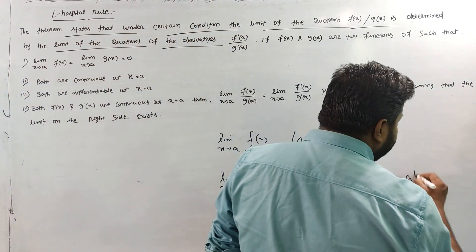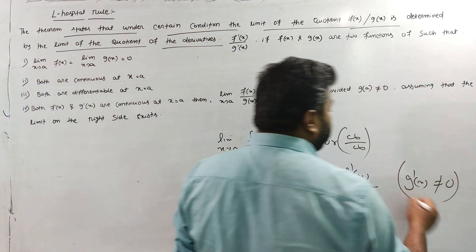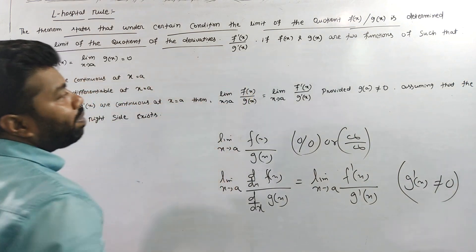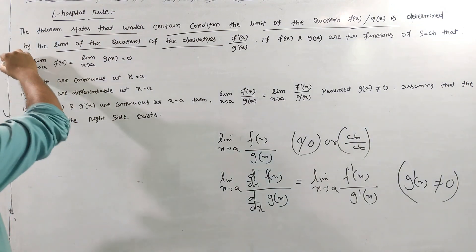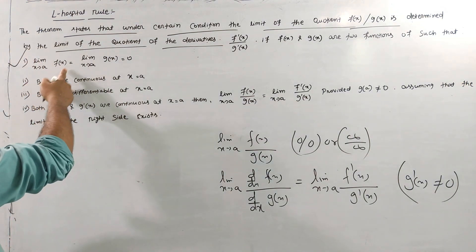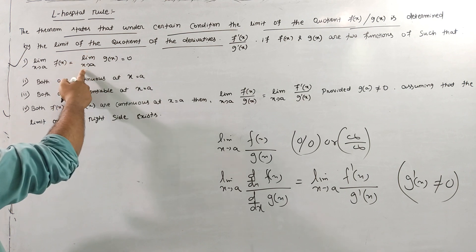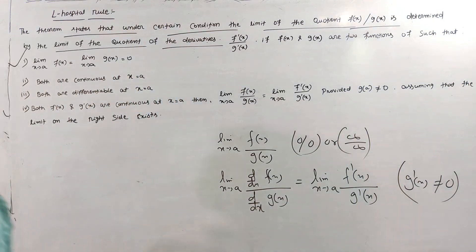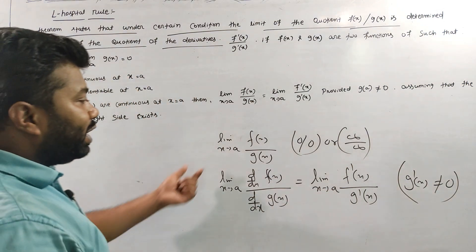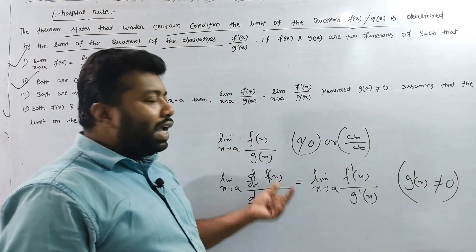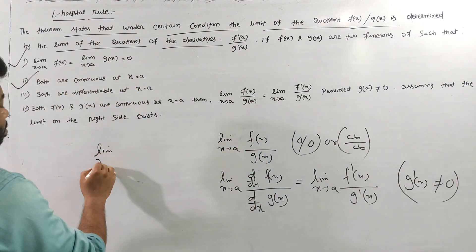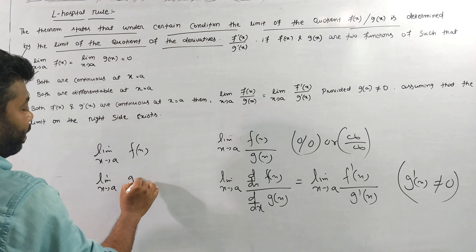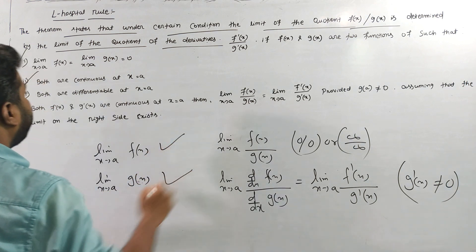Now, if the limit is in the 0/0 form — that is, if f(x) and g(x) are two functions such that the limit as x tends to a of f(x) equals 0 and the limit as x tends to a of g(x) equals 0 — and both are continuous, then we apply the rule.